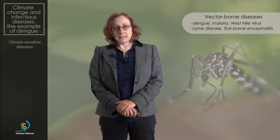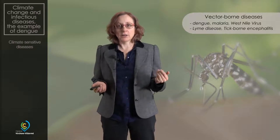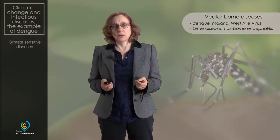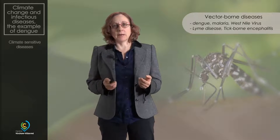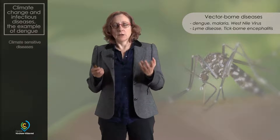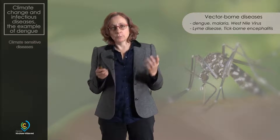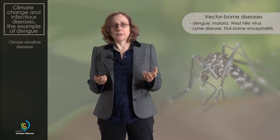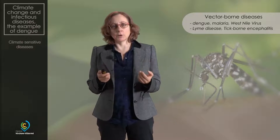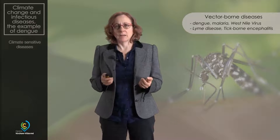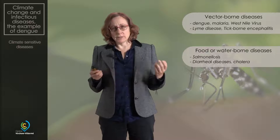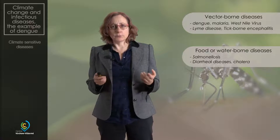Let me give you some examples of climate-sensitive diseases. They can be vector-borne diseases such as malaria or dengue, which are transmitted by mosquitoes, or Lyme disease, which is transmitted by ticks. Those vector-borne diseases are transmitted not directly from human to human, but through a vector, which is an insect, a tick, or another animal. There can also be food-borne or water-borne diseases that are often transmitted through bacteria.